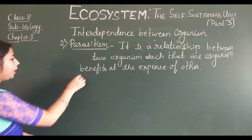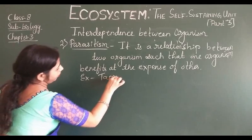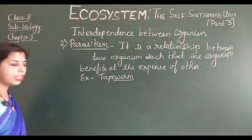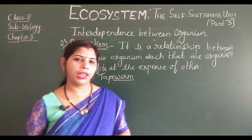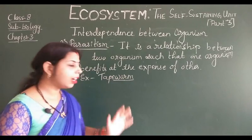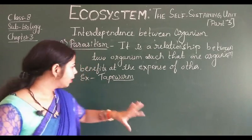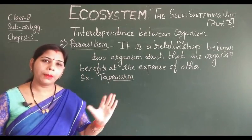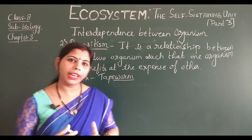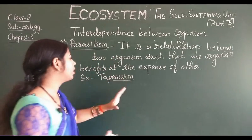An example of parasitism is the tapeworm, which lives in the human intestine. The tapeworm sucks nutrition from the human intestine to survive, but in doing so it harms the human host. That is why this relationship is known as the parasite-host relationship.